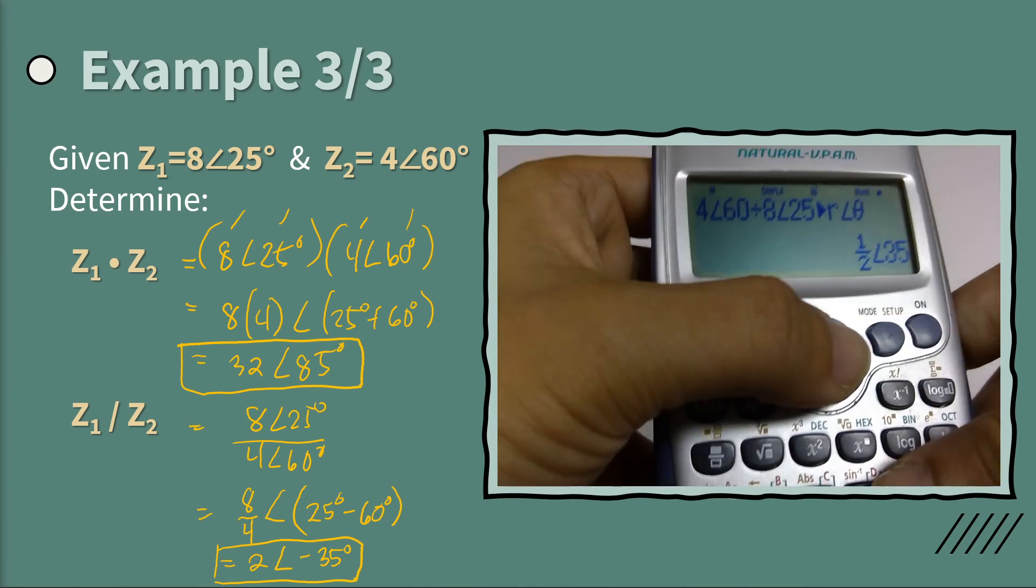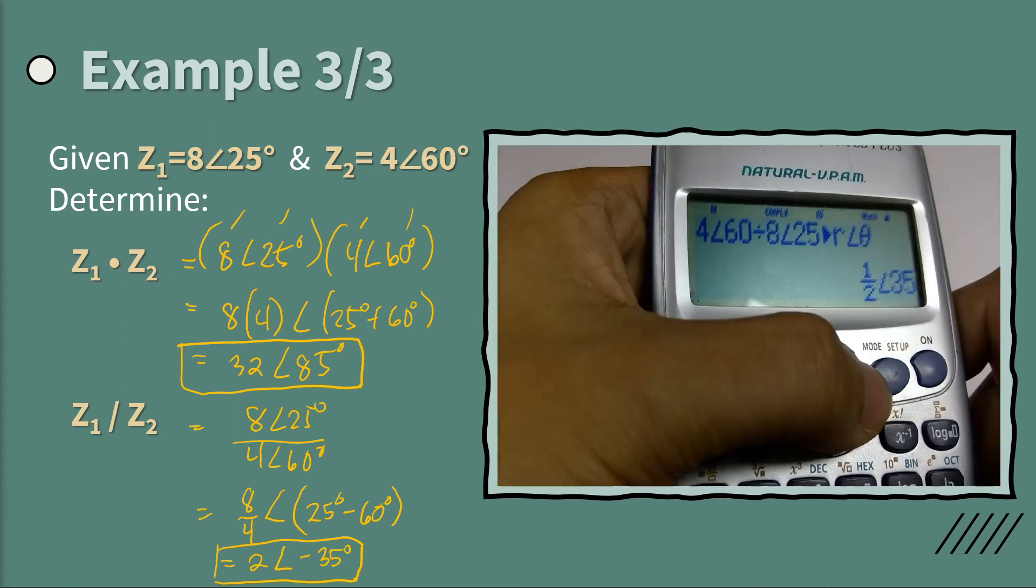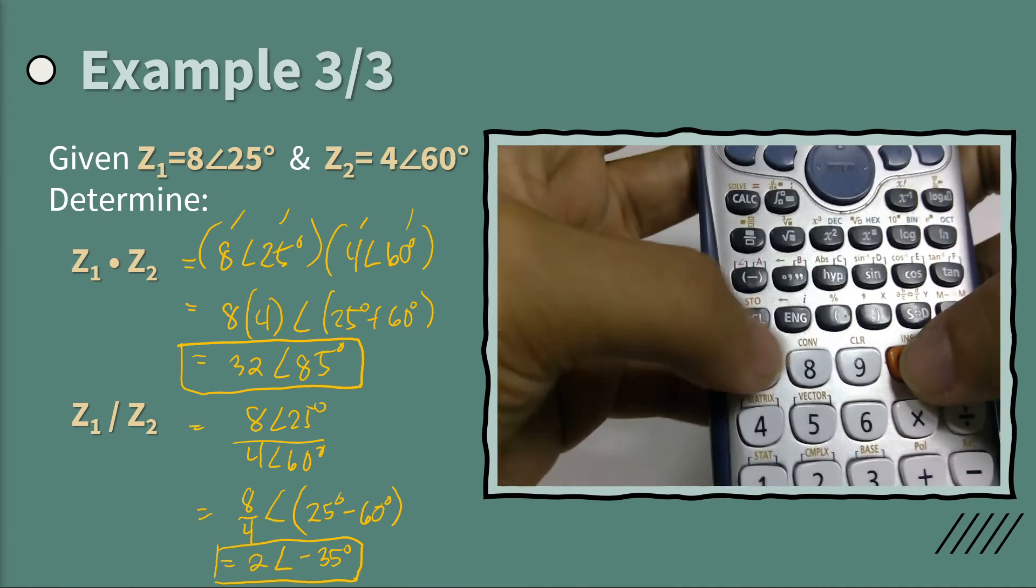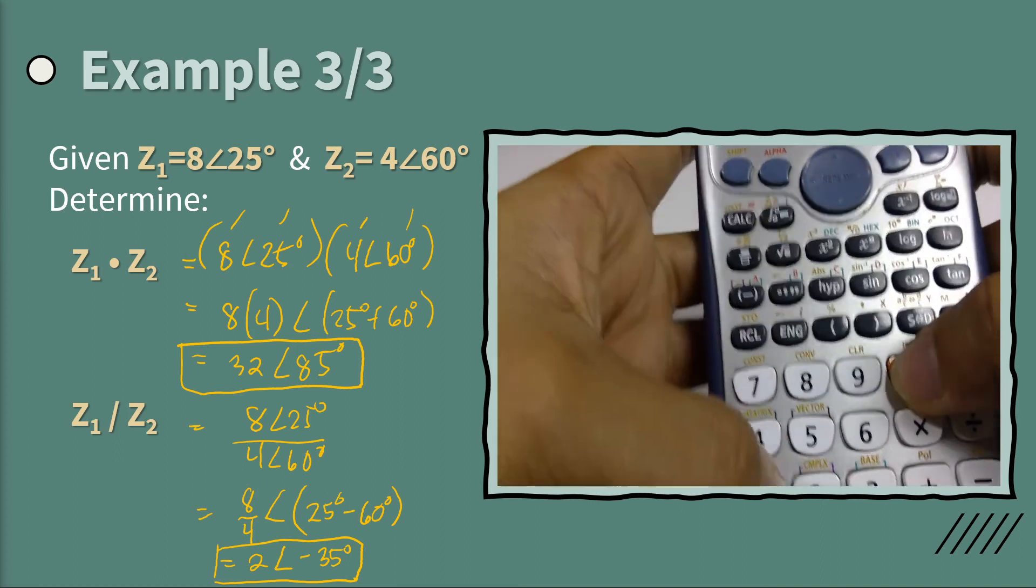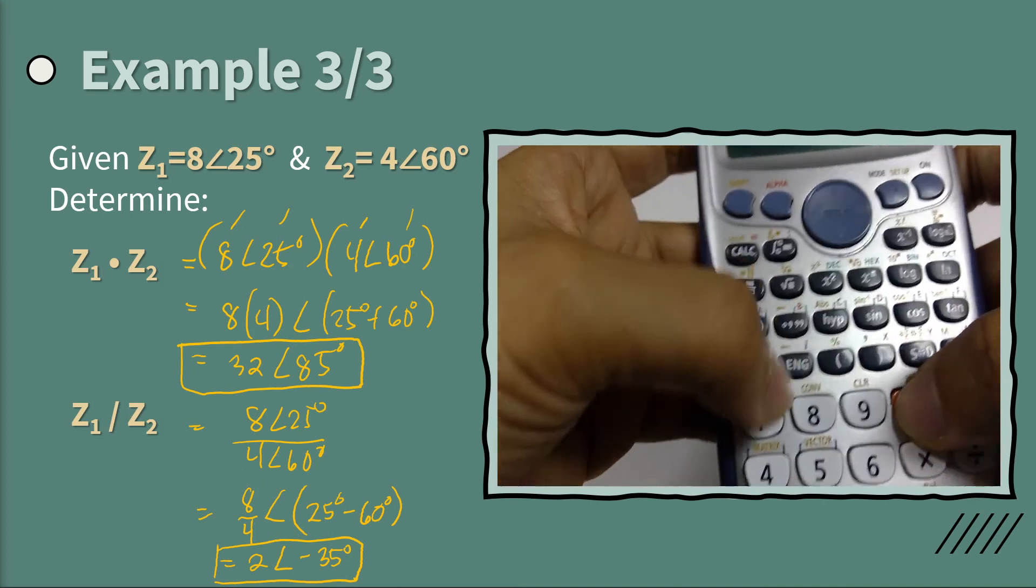Oops, I think I made a mistake. We made a mistake because we interchanged the... This should be 8 here. 8 angle 25 and then 4 angle 60.